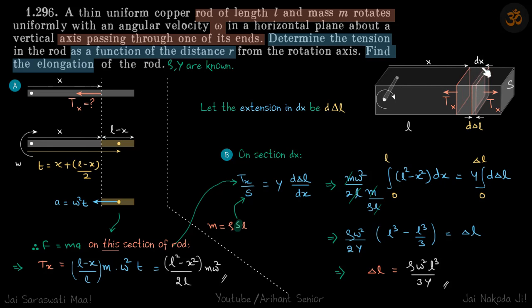In the DX part of this bar, the elongation is D delta L. On the DX element, now we can write our standard formula: stress by strain is equal to Y. Stress will be T upon S, and strain will be D delta L by DX. If you put the value of tension at distance X, what we found here, we'll get a relation between X and delta L by integration.